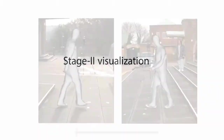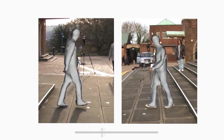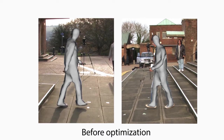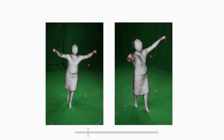We now visualize the optimization process that happens in stage 2 of our approach. Note how the contours of the model quickly converge to the foreground borders, without requiring explicit silhouette segmentation.